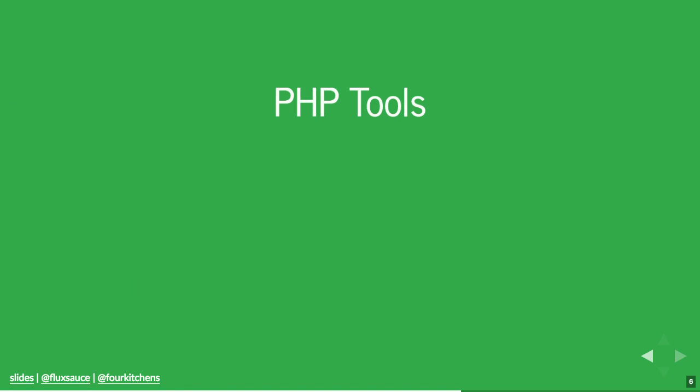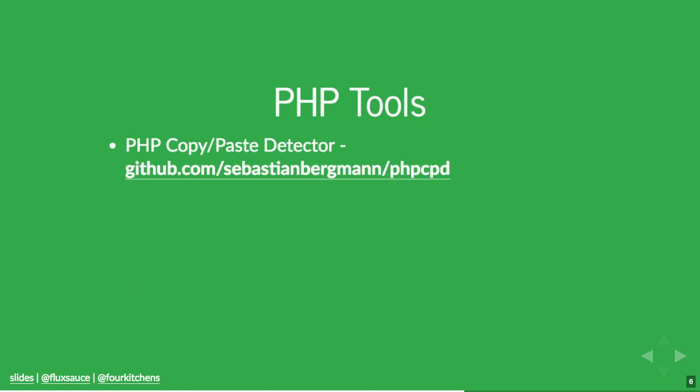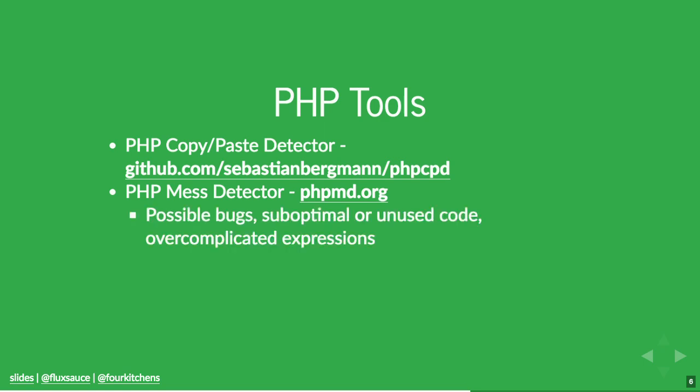Some PHP-specific utilities: PHP Copy/Paste Detector does exactly that — it looks for large blocks of repeated code that should probably be consolidated. Developers should be delivering functionality, not producing as many lines of code as possible. PHP Mess Detector looks for badly structured code — things with really ridiculous nesting and complexity, suboptimal code, over-complicated expressions, or possible bugs. There's some crossover between this and other tools.